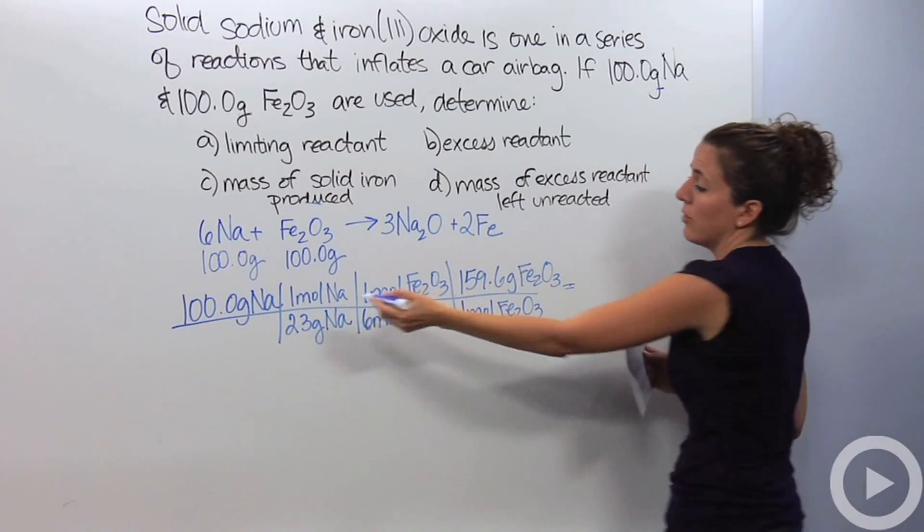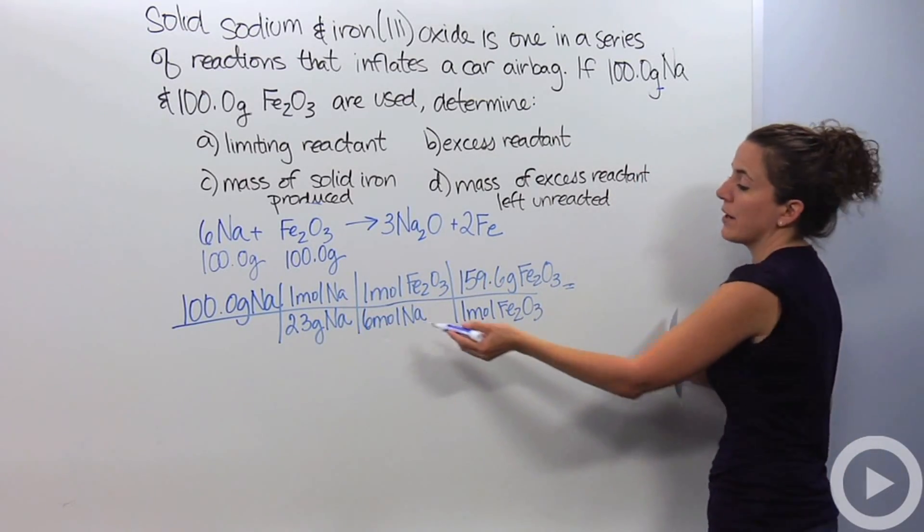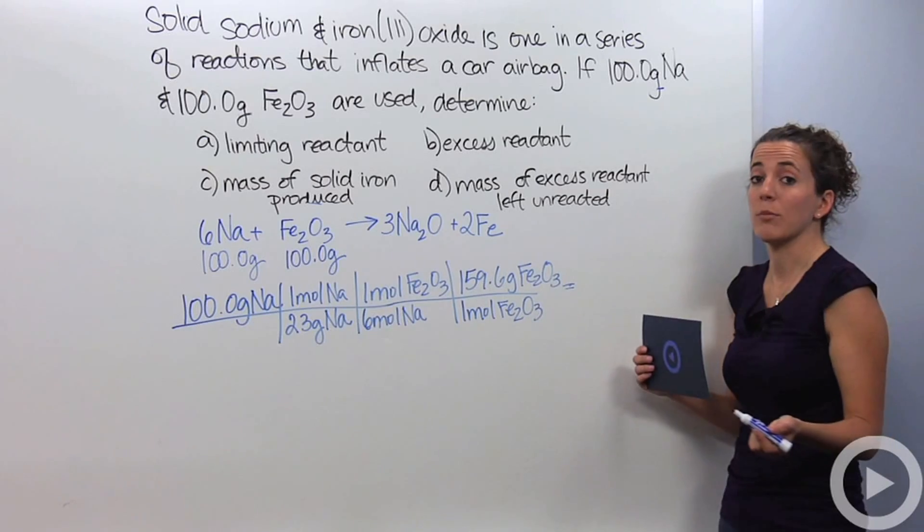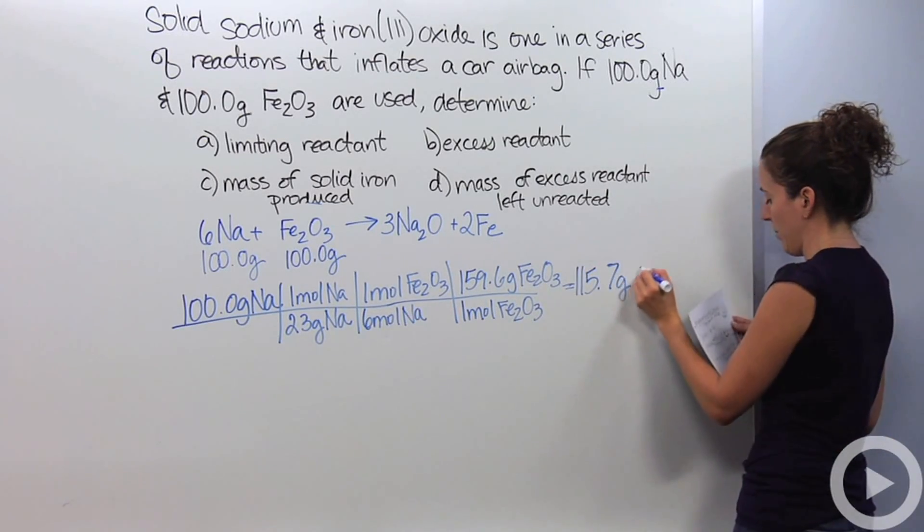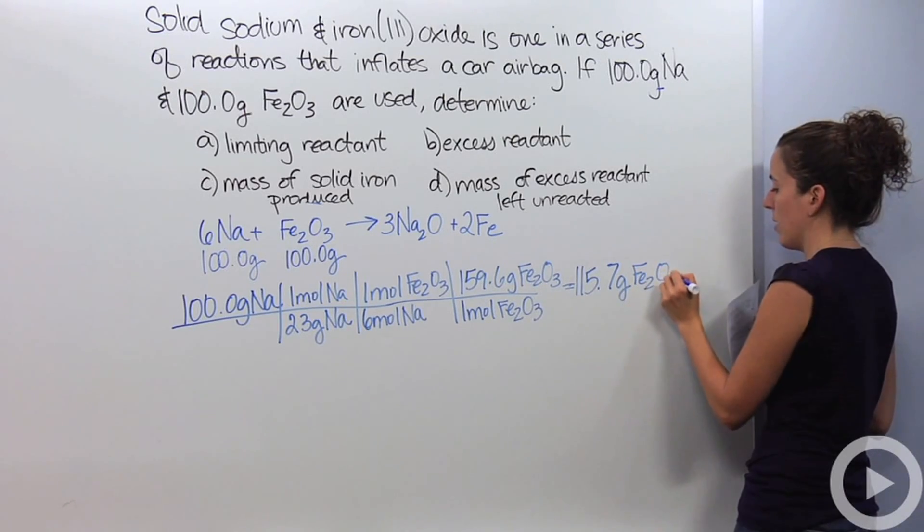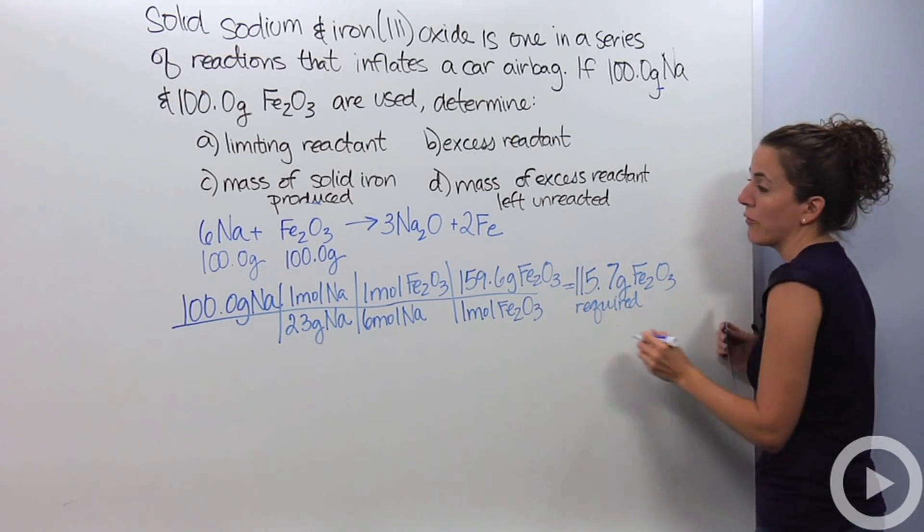So, doing this math, 100 times 1 times 1 times 159.6, divided by 23, divided by 6, divided by 1, it's going to give me 115.7 grams of Fe₂O₃ required. Required for 100 grams.